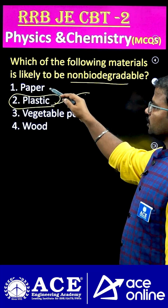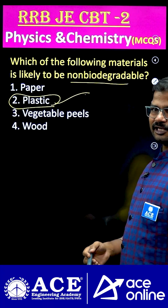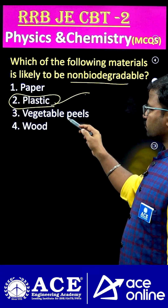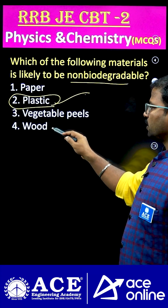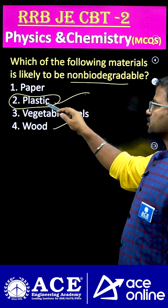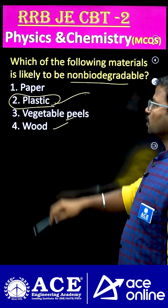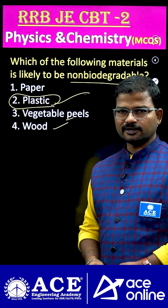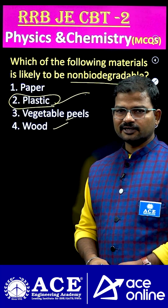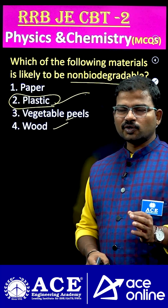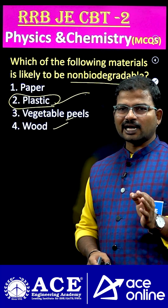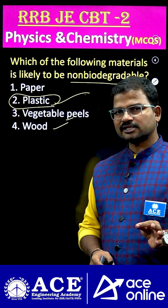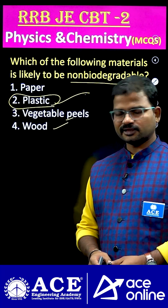As for the remaining materials — paper has cellulose and is easily degraded into the soil; vegetable peel and wood are also biodegradable. So except for plastic, the remaining materials are all considered biodegradable. By the way, which is the most bio-organic compound in nature? If you know the answer, please comment. Thank you.